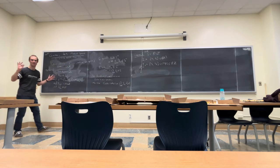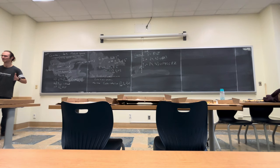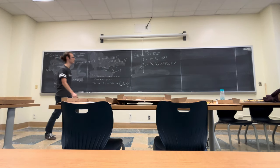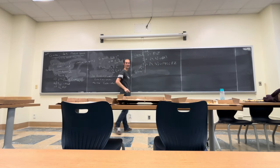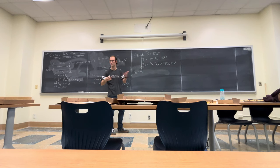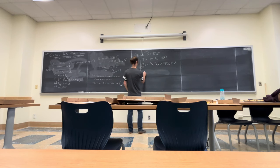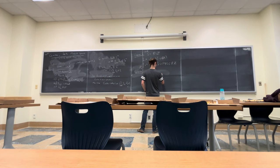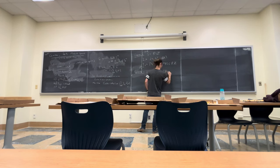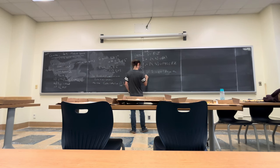No matter what set I picked initially, you were going to find a set inside. So what property of R\Z made this possible? Well, it was being an open dense set, right? Every interval I picked, you could pick a smaller interval within. So if S is open dense, then P2 has a winning strategy.